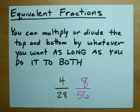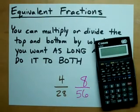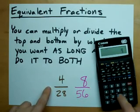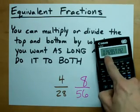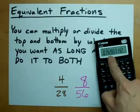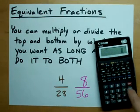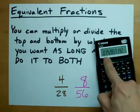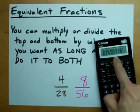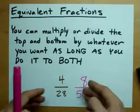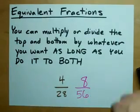Here's what I mean by equivalent: if you take 4 divided by 28, I get 0.1429. If I take 8 divided by 56, I get the exact same number out. They're the same thing — they're just written differently.